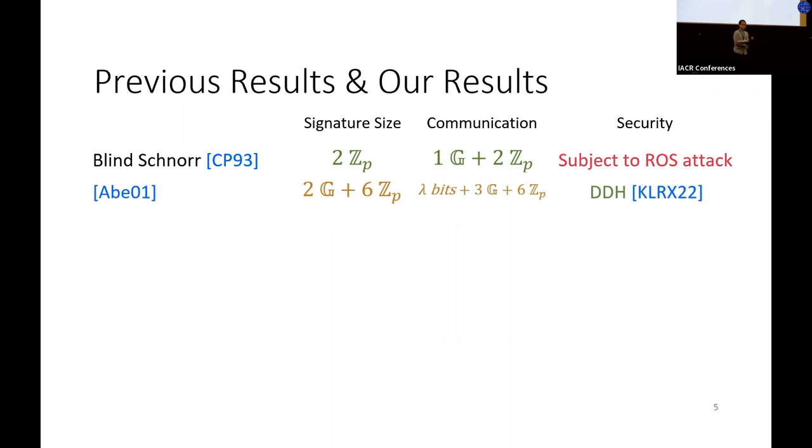An alternative is a scheme proposed by Abe in 2001. However, the scheme is less efficient and its original security proof was found to be incorrect. But recent results by Kastner show its security in the algebraic group model and the random oracle model. At this point, I'd like to point out that all the results shown in this page assume these two ideal models.